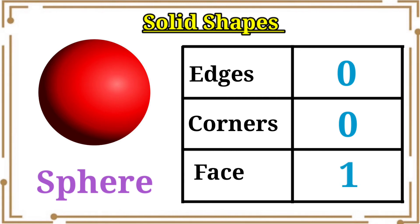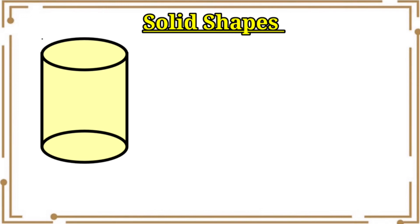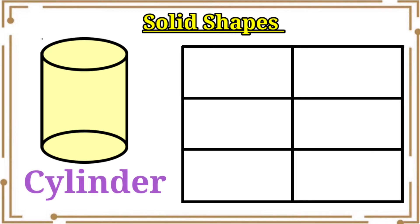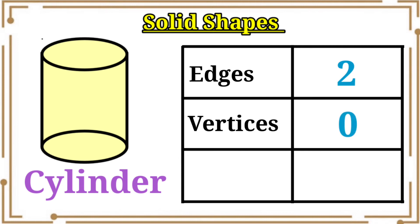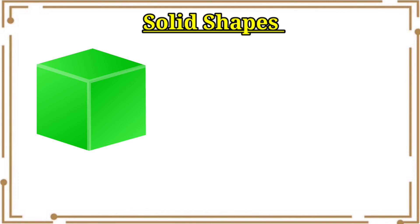Then let's see the next shape. This solid shape name is cylinder. Cylinder has two edges, zero vertices, and two faces.